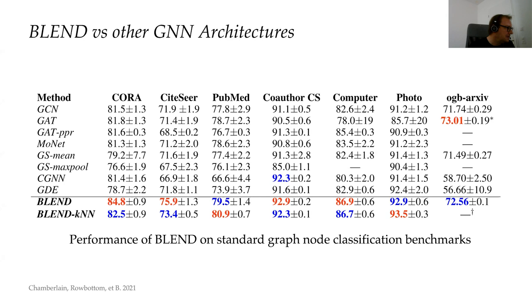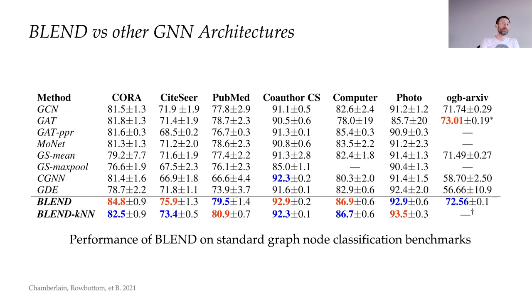A question from Christian Eichenberger: could edge features be easily integrated into the Beltrami flow approach? We didn't integrate edge features in that work. Trivially, edge features could be transformed into scalar weights for weighted graphs. For the sheaf diffusion framework, edge features can certainly be integrated — we learn the restriction matrices from node features, but they could also be made dependent on edge features if available.